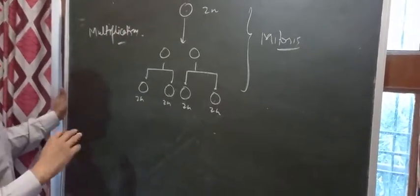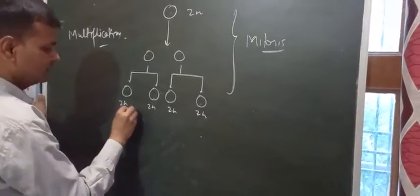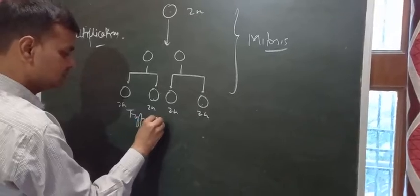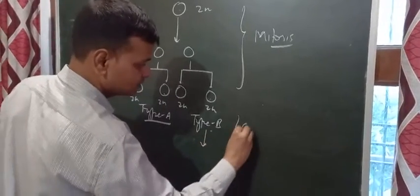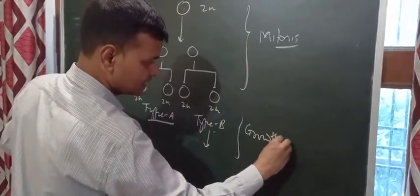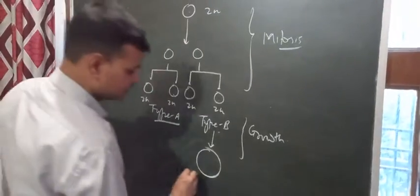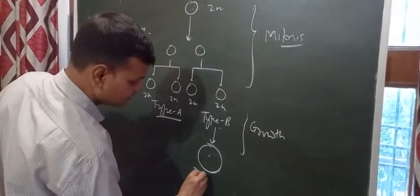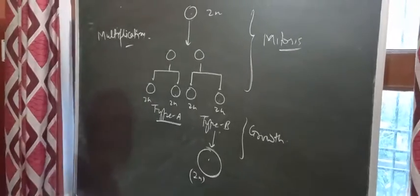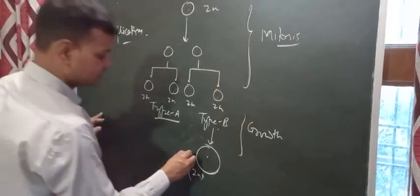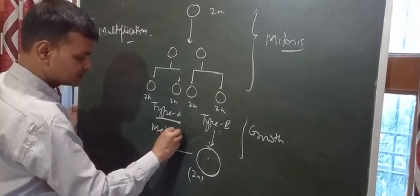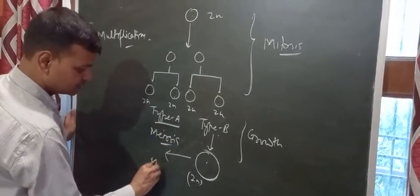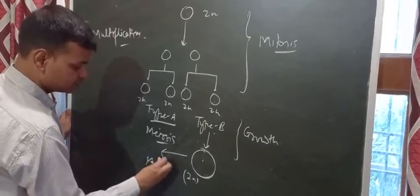The cells differentiate into type A as a stem cell and type B, which will further grow through the growth phase to form the primary spermatocyte. Once the primary spermatocyte divides by meiosis, this marks the beginning of the third phase, the maturation phase.